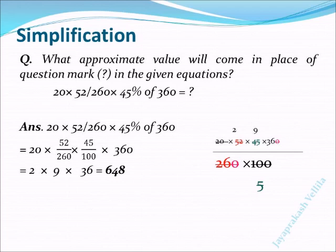Here, 20 can be simplified. 5 and 45 can be cancelled, we get 9. Zeros in 360 and 260 can be deleted. Then 52 and 26 can be cancelled. You get to the final answer.